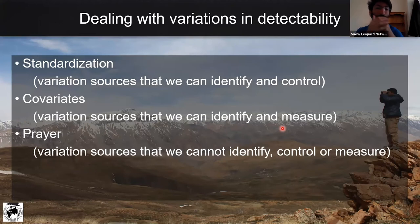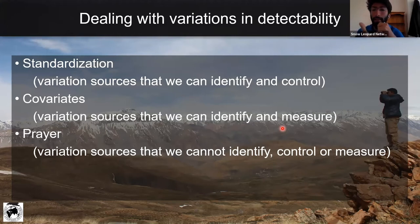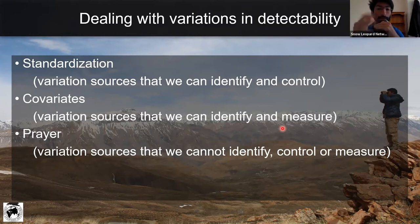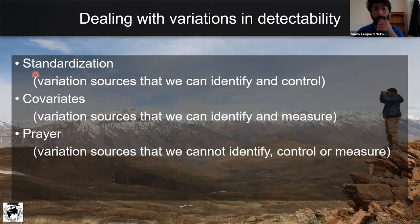Lastly, there are variation sources we cannot even identify, not control or measure — random errors that pop in. Even after training observers for multiple days, maybe on that given day the observer isn't feeling well, or a group of ungulates prefers to rest during the morning rather than the afternoon. So these random sources of error cannot be identified. What I want everyone to take away is: what can you standardize? What can you use as covariates? And what can you potentially not even identify, and how might that affect your data?